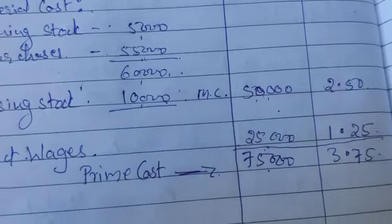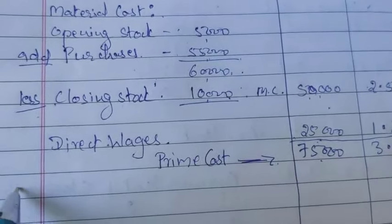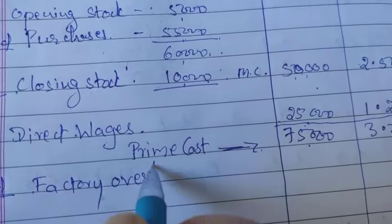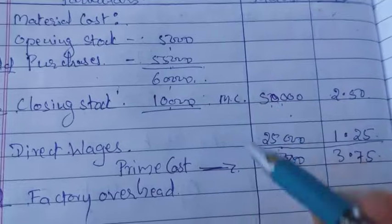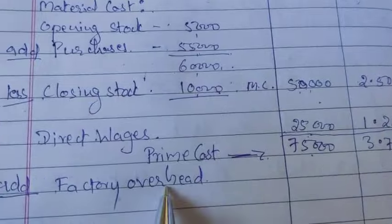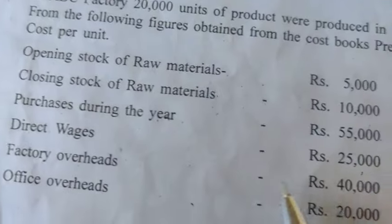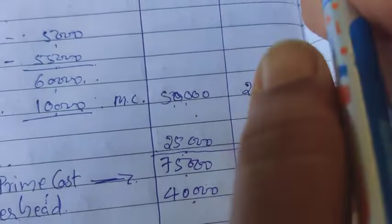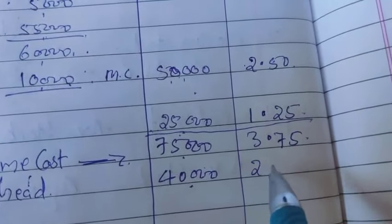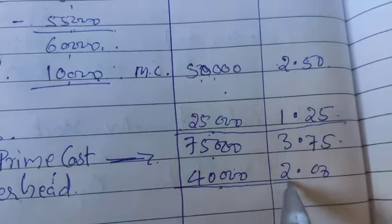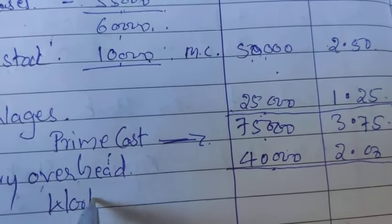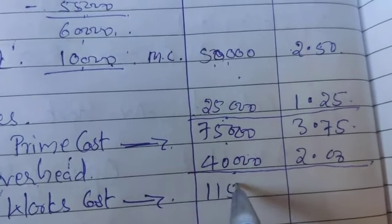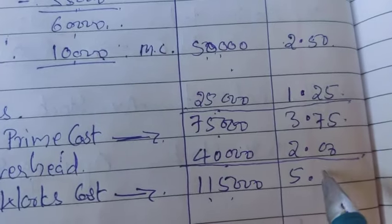Prime cost — without these you cannot produce, which is why it is called prime cost. Add factory overhead, which includes manufacturing and processing costs. Factory overhead is $40,000, with a cost per unit of $2. Adding this gives works cost of $1,15,000 with a cost per unit of $5.75.